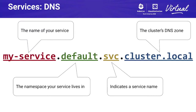Here is the most typical record you will use — a DNS record for a service. It's composed of four pieces: the name of your service, the namespace it lives in, then 'svc' which is a constant indicating this is a service name, and finally the cluster's DNS zone. In this case we have cluster.local, but this is not strictly required — you can configure your cluster DNS zone during setup to something else.